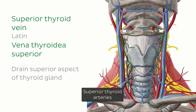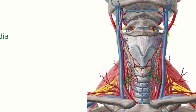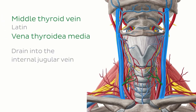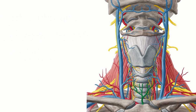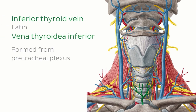The superior thyroid veins travel towards the carotid sheath and drain into the internal jugular vein. The middle thyroid veins exit the lateral side of the thyroid gland and also drain into the internal jugular vein. The inferior thyroid veins are formed from the pretracheal plexus.